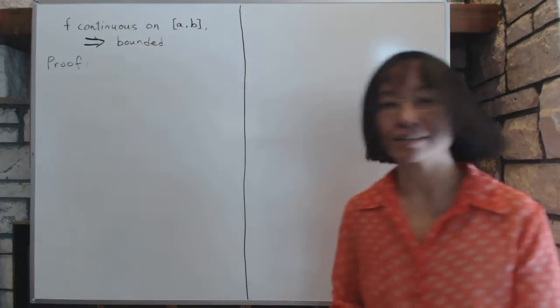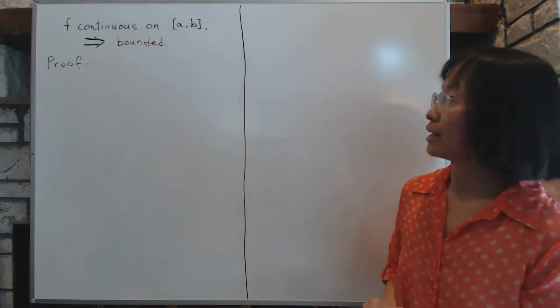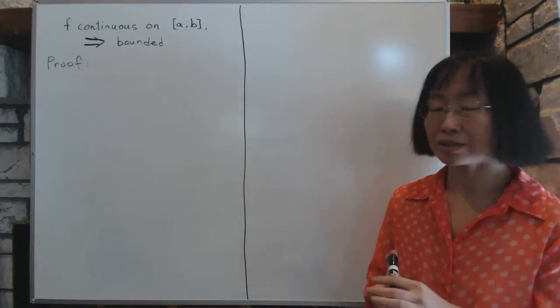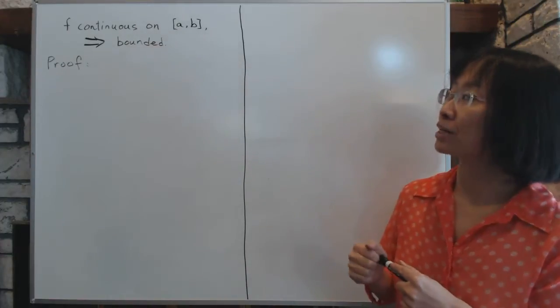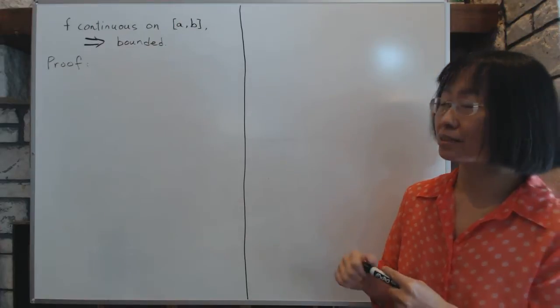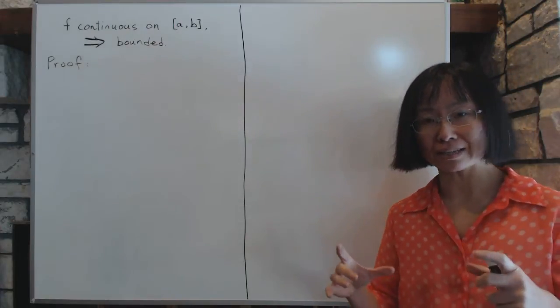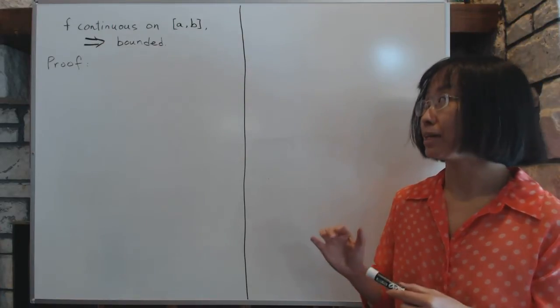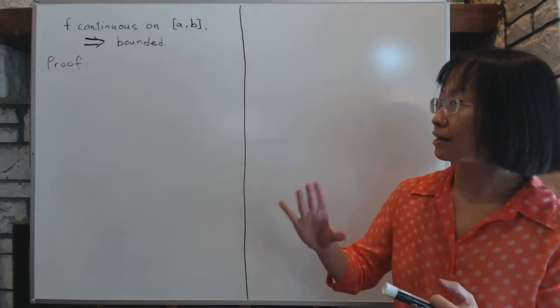Now, having said that, let's look at the next theorem. The theorem we're going to study today is the boundedness of continuous functions on closed intervals. Suppose f is a function that is continuous on a closed finite interval from a to b. Then f is bounded on this entire interval from a to b.